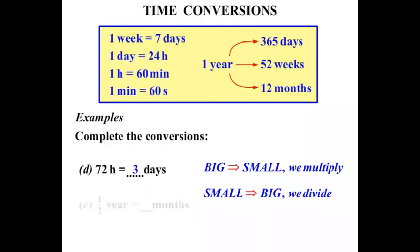The next one: half a year equals how many months? Years and months - what's the connection? One year is 12 months. So we're going from years to months, from big to small, so we multiply. We multiply by the 12. So we've got a half times 12 - in other words, what's a half of 12? A half of 12 is 6, so half a year is the same as 6 months.